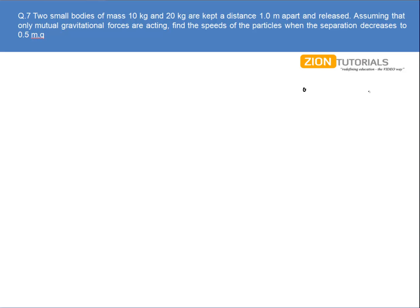Now let's say I do have two particles that are kept at a 1 meter distance initially. This is particle A, this is particle B. The gravitational force will act between them and we know that the gravitational force is an internal force. So if only gravitational forces are acting between two particles, then the linear momentum will remain conserved.